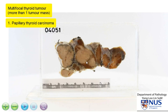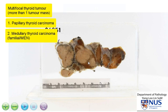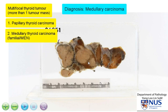These can be in one lobe, or they can be in both the thyroid lobes. Another important differential is medullary thyroid carcinoma, which this is an example of. And in the context of familial medullary thyroid carcinoma, or medullary carcinoma with underlying MEN syndrome, this could also present as multiple tumor nodules.